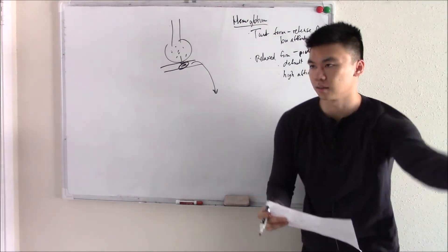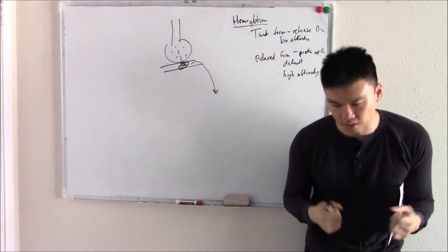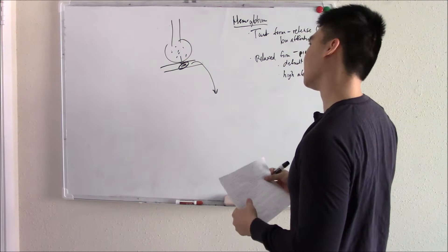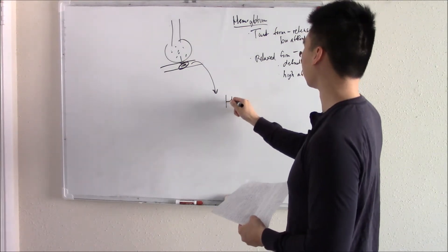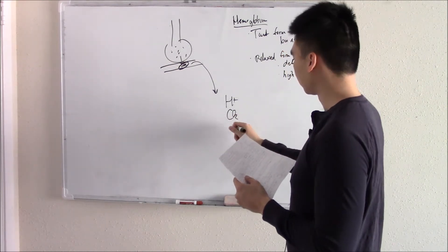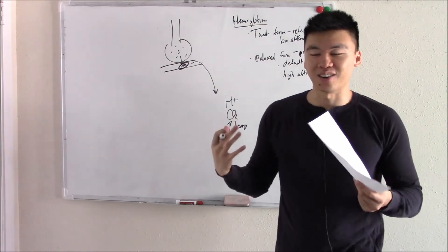The easiest way I remember it is I think of someone that's exercising really hard. When they're exercising really hard, their tissue makes lactic acid, so H+. Their tissue makes a lot of byproducts like CO2. Their tissue is at an increased temperature. Don't you get really hot when you exercise?